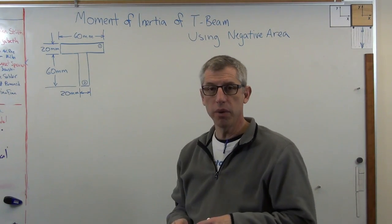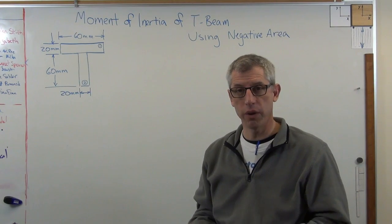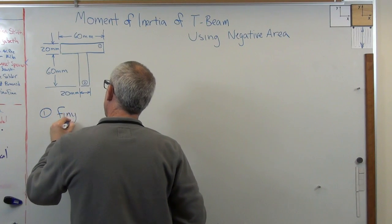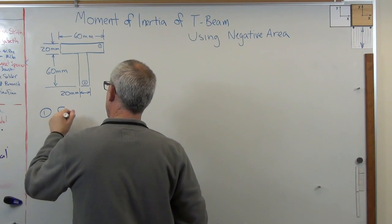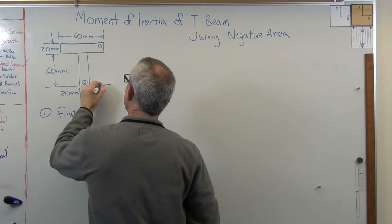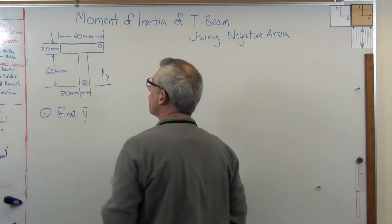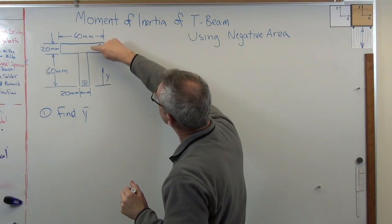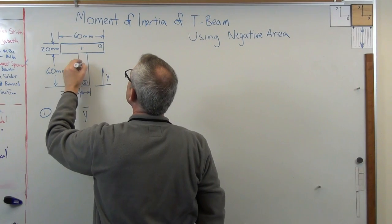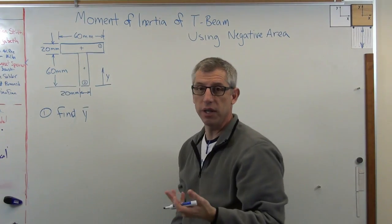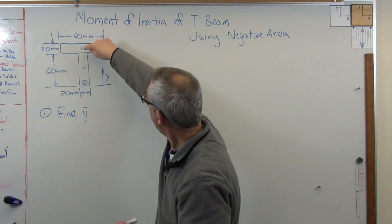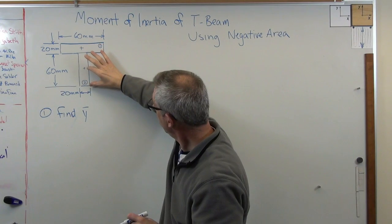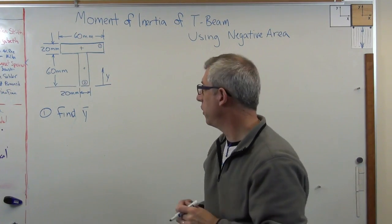If you're going to find the area moment of inertia of anything, you need to know first where the centroid is. So we're going to start by finding y-bar, and I'm going to measure y from right here. You can measure y from anywhere — it doesn't matter. I've got these boxes labeled one and two. The centroid of box one is obviously in the middle of the rectangle, halfway up — so that height for box one is 70 millimeters, and for box two it's going to be 30 millimeters.